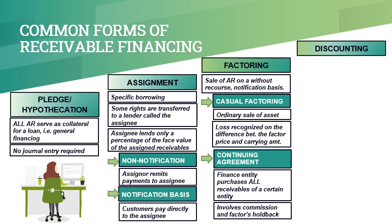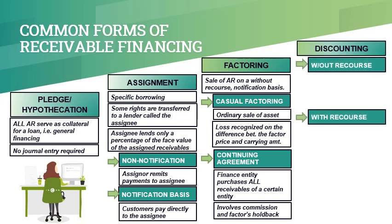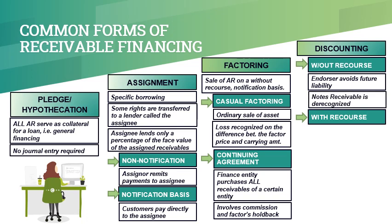Discounting is the process of obtaining cash on a note before its maturity date. The payee of the unmatured note endorses the note to the bank and the bank lends out an amount equal to the maturity value of the note less interest deducted in advance. The endorsement by the payee of the note may be either without recourse or with recourse. An endorsement without recourse excuses the endorser from any future liability in case the note is dishonored. Since all the risks and rewards on the note have been transferred to the bank, the note is de-recognized from the books of the payee with a credit to notes receivable.